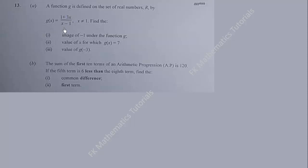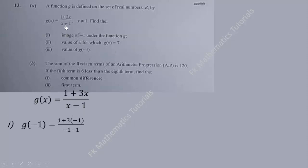(1 + 3x)/(x - 1), where x is not equal to 1. Find the image of -1 under the function g. The image of -1 is the output where we substitute -1 into the function.